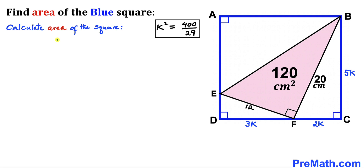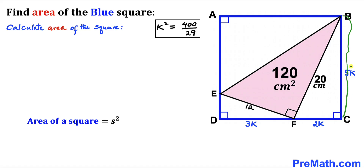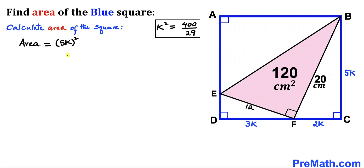Now for the final step: let's calculate the area of blue square ABCD. Recalling the area of a square formula: area equals S squared, where S is the side length. The side length of this blue square is 5K, so the area equals (5K)², which simplifies to 25 times K squared.